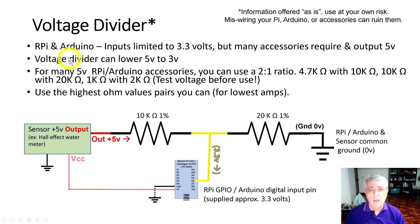Trust me, been there, done that. The voltage divider is a simple way to lower that 5V down to 3V. For many of these 5V Arduino accessories, you can just use a 2 to 1 ratio.